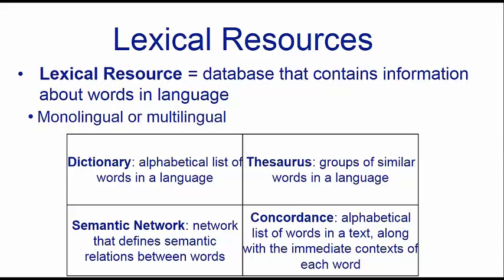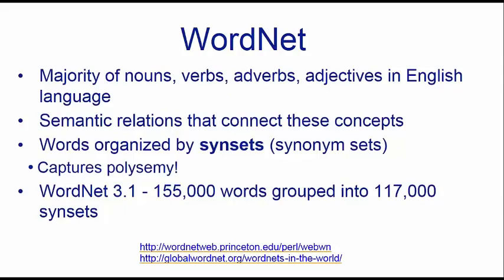WordNet is one of the most commonly used lexical resources for English and nearly 50 other languages. In English it has very wide coverage — 150,000 words grouped into more than 100,000 synonym sets. It is a 100% public resource for both research and commercial purposes, and it has APIs in a number of programming languages, making it very easy to use and interact with online.